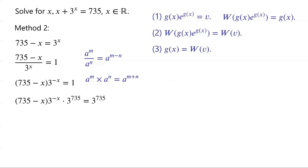We know that a to the power of m times a to the power of n is equal to a to the power of m plus n. By applying this, 3 to the power of negative x times 3 to the power of 735 is equal to 3 to the power of 735 minus x.